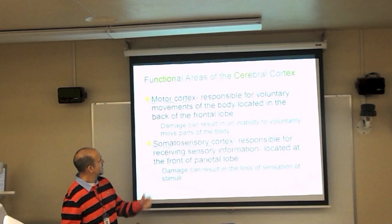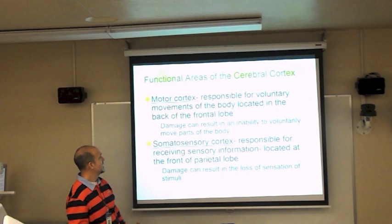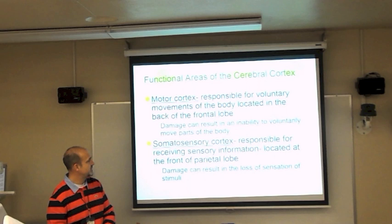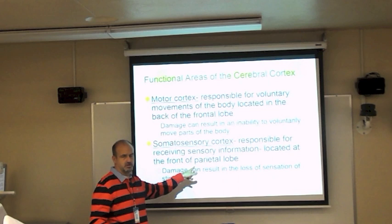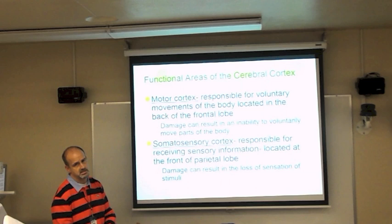Functional areas are specialized for specific functions. The motor cortex, located in the back of the frontal lobe, is responsible for voluntary movements. Damage can result in an inability to voluntarily move parts of the body. The sensory cortex, located at the front of the parietal lobe, is responsible for receiving sensory information. Damage can result in loss of sensation — some people lose the ability to taste or process visual or auditory information.